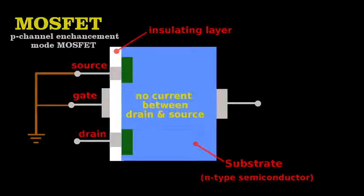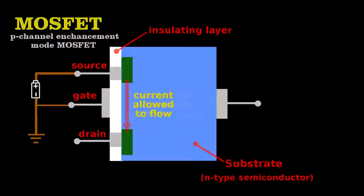When we create a voltage difference between the gate and the source, it generates a field through the insulating layer that draws the free positive charge carriers towards the gate, opening a channel that now allows current to flow.